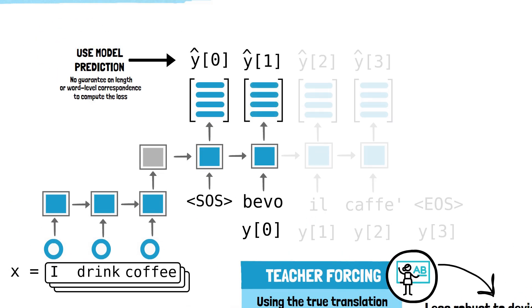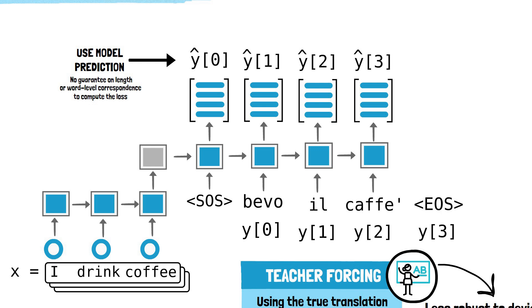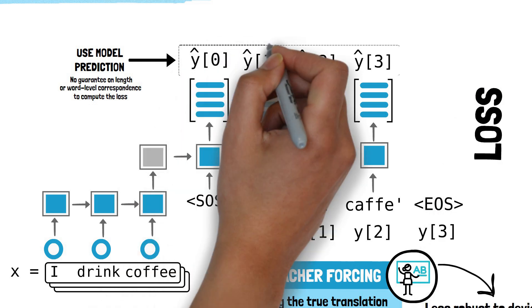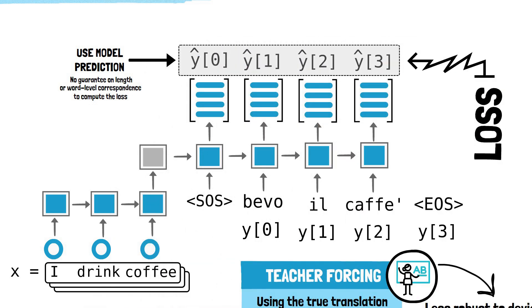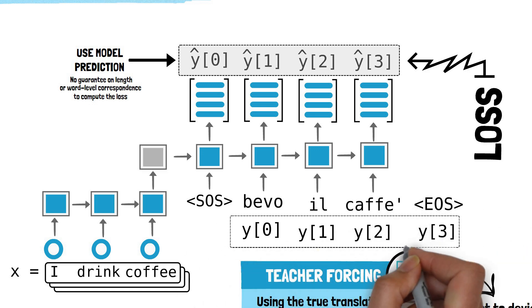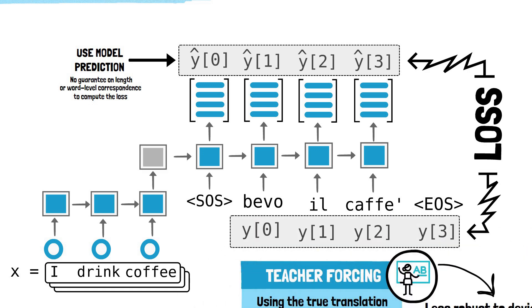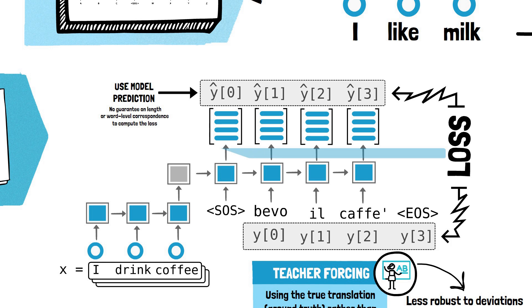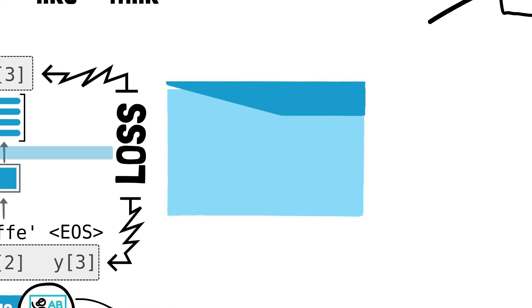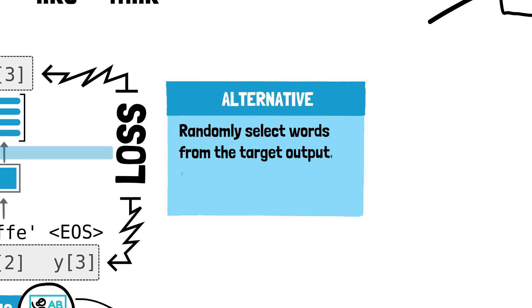After completing the full forward pass, we can determine the loss by comparing the decoder's output logits at each step with the target sentence. It's important to note that the loss calculation extends all the way back to the encoder.